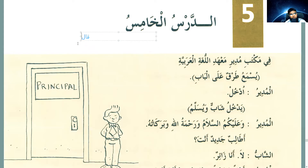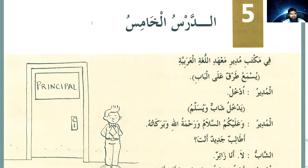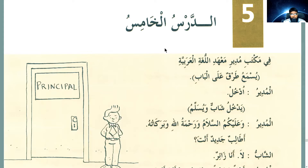Then we have majhul forms. For a normal verb we make qeela — qala becomes qeela, 'it was said.' Same thing with yaqulu: it should become yufa'alu pattern, so yaqulu becomes yuqalu — they changed it to an alif. So yuqalu. These are the things we are going to learn insha'Allah. Don't worry about them; the quantity is manageable and you just remember the vocabs, it becomes second nature. So let's begin bismillah.